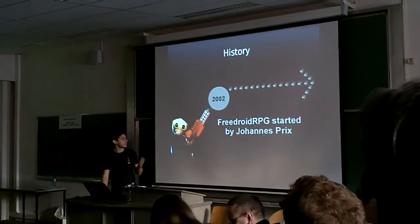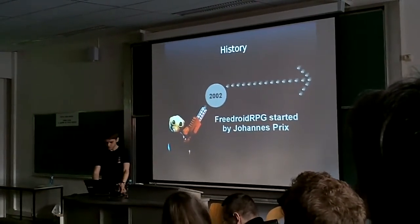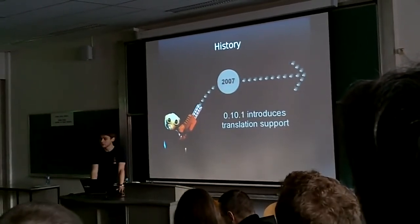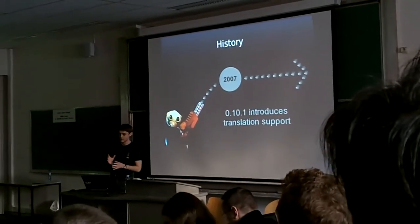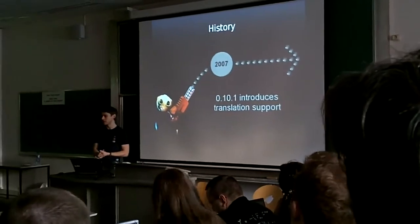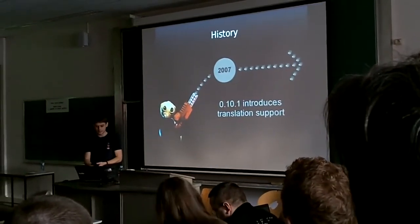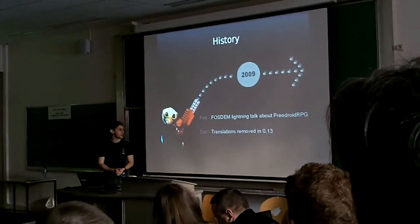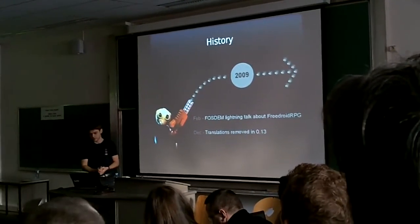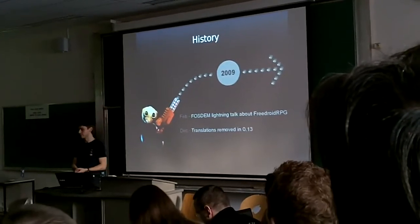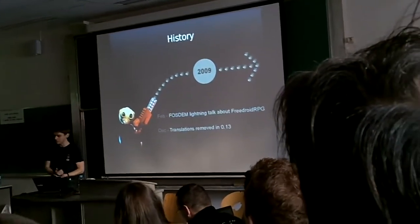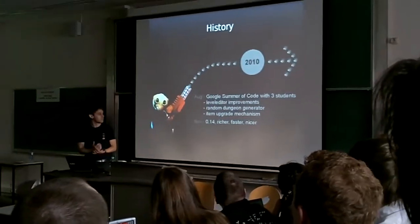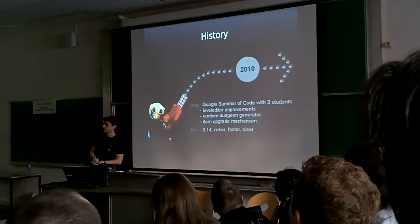A quick history of the project: the game was started in 2002. I took charge in 2004 and we introduced translations because we have a significant volume of dialogue. We decided to introduce translations to widen our audience in 2007, and it was not a very good idea because it was too early. In 2009 I gave a first presentation here, and at the end of the year we noticed that the translations were too much of a maintenance burden because the dialogues were changing too much, so we had to remove them and have not put them back. This is perhaps the biggest problem with FreeDread RPG today — if you do not read English you cannot play it.